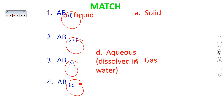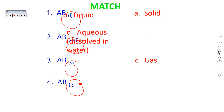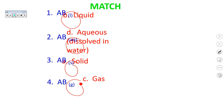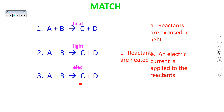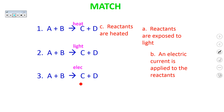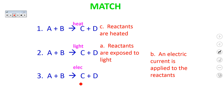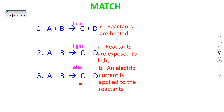If you have a word written above an arrow, you might see 'heat,' 'light,' or 'ELEC.' Heat means that the reactants are heated in that reaction. Light means the reactants are exposed to light. And ELEC means an electric current is applied to the reactants. In activity 2, we're going to identify the reactants and products in the following examples.